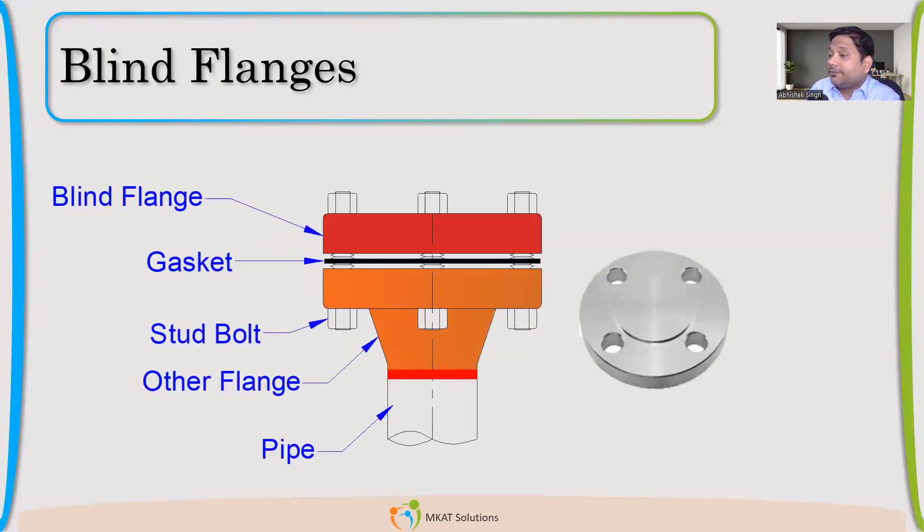To cover all of these, if there is no pipe coming, then we have to use a blind flange to close them.